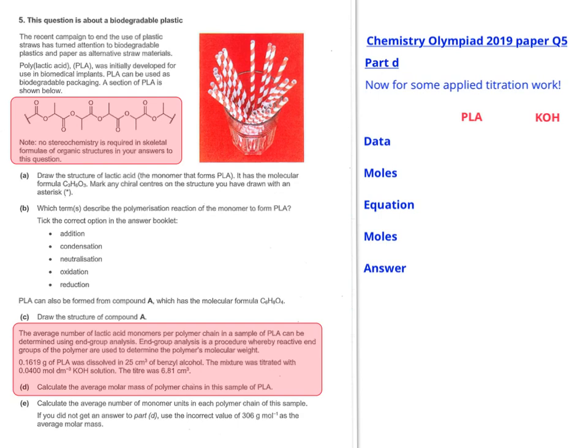So what we do is we put in the data that we actually know. So we can clearly see that from the information we have, we can calculate the moles of KOH that was used. So multiplying those two numbers together gives you 2.72 times 10 to the minus 4 moles.